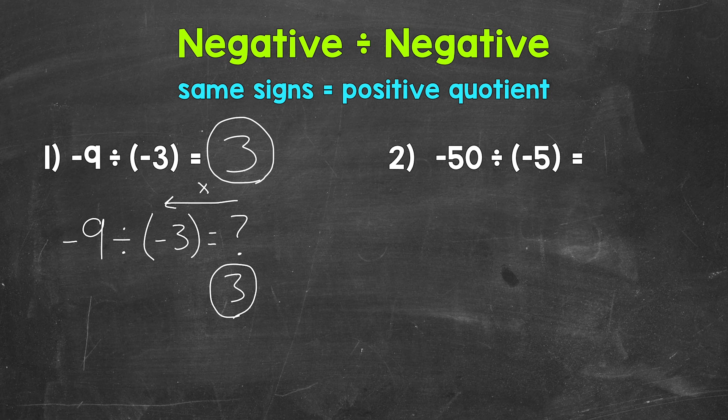Positive 3 times negative 3 equals negative 9. And we know that 3 needs to be positive because a positive 3 times a negative 3 will give us a negative answer, negative 9.